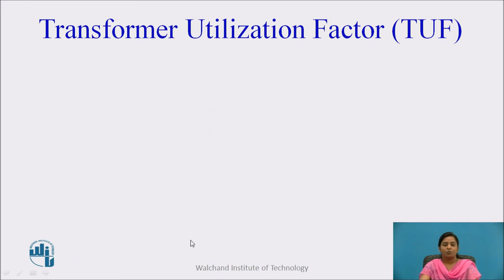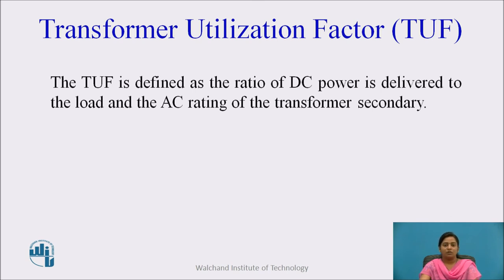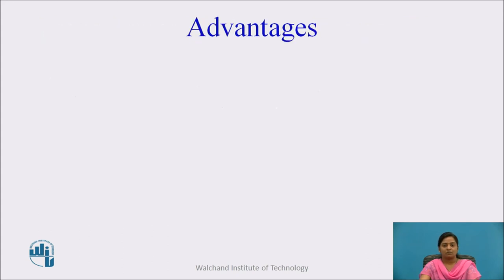Next is the transformer utilization factor (TUF). It is defined as the ratio of DC power delivered to the load and the AC rating of the transformer secondary. For a half wave rectifier, the transformer utilization factor is equal to 0.287.